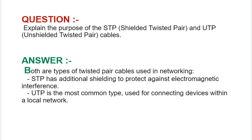Our next interview question is: Explain the purpose of STP, i.e., Shielded Twisted Pair, and UTP, i.e., Unshielded Twisted Pair. Your answer should be: Both are types of twisted pair cables used in networking. STP has additional shielding to protect against electromagnetic interference. UTP is the most common type, used for connecting devices within a local network.